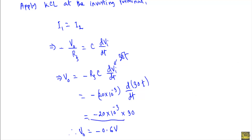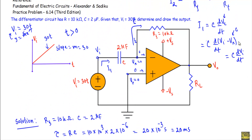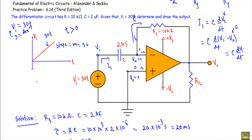This is the output voltage for the operational amplifier differentiator circuit. For this ramp input voltage when t is greater than zero, as long as there is an input voltage our output voltage will be fixed at minus 0.6 volts. This constant value is the output waveform of this differentiator circuit.